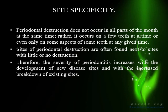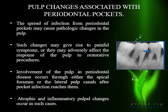Site specificity: periodontal destruction is unique in that sometimes only one surface of a tooth may be involved — for example, only the buccal surface of a first molar — while the mesial and distal surfaces are completely healthy. Pulpal changes can occur when pockets extend into regions with lateral or accessory canals, particularly in furcation areas and the apical third of the root. Bacteria and endotoxins from the pocket can enter these canals and cause pulpitis, inflammatory changes, or even atrophic changes in the pulp.